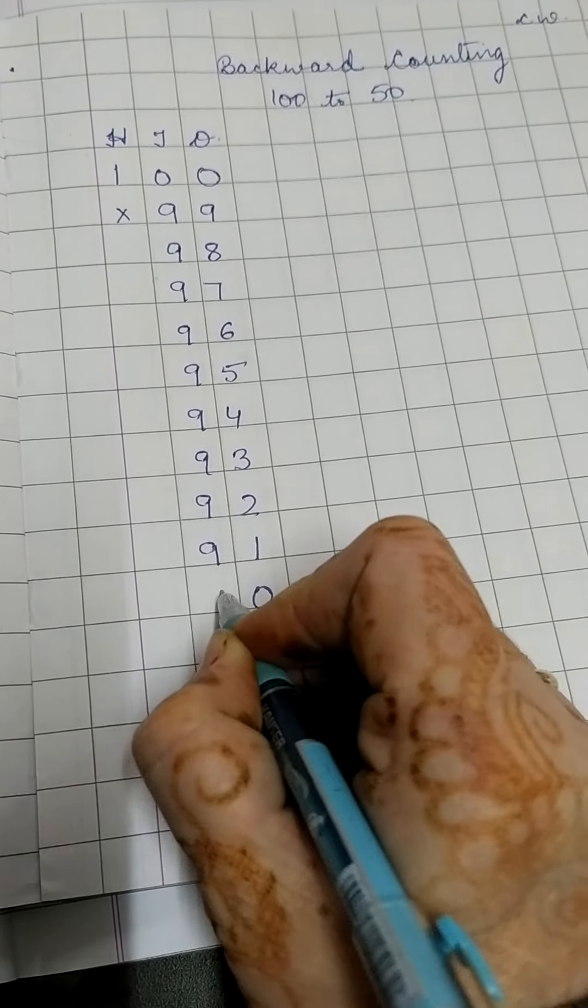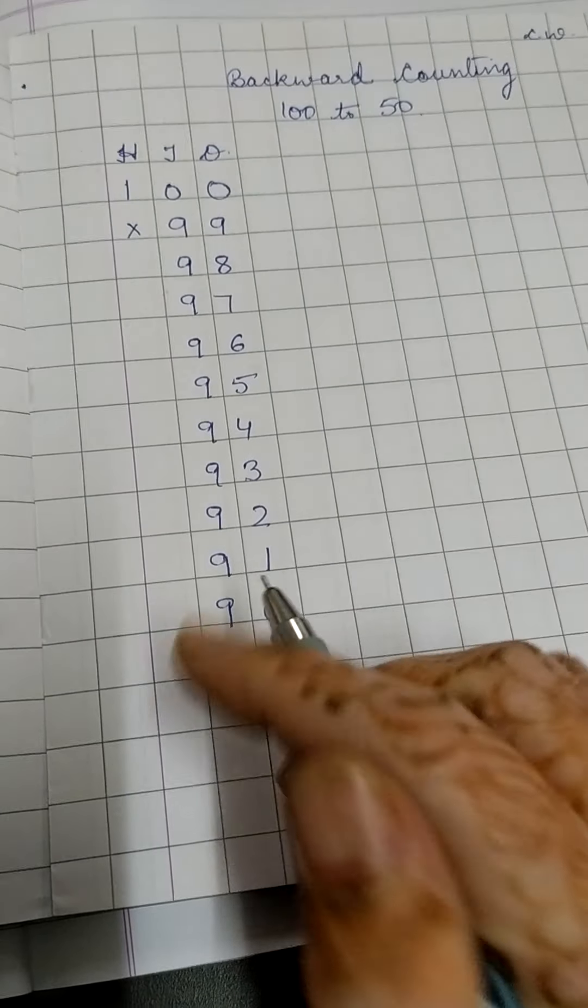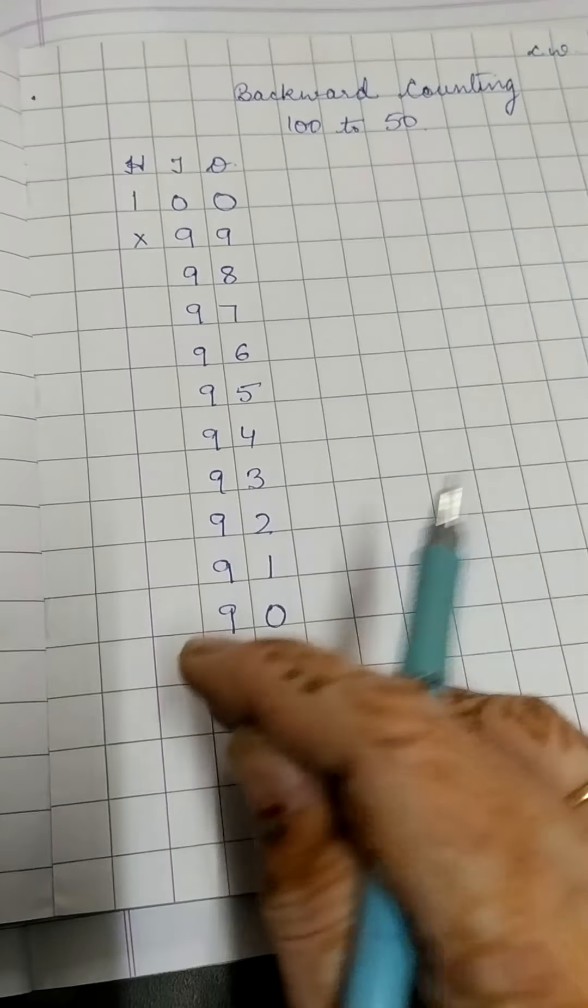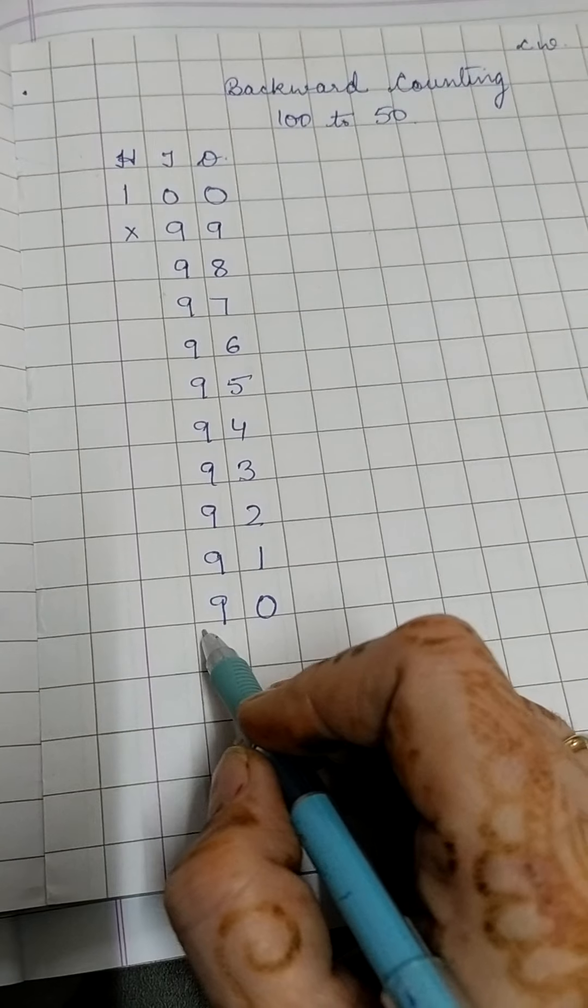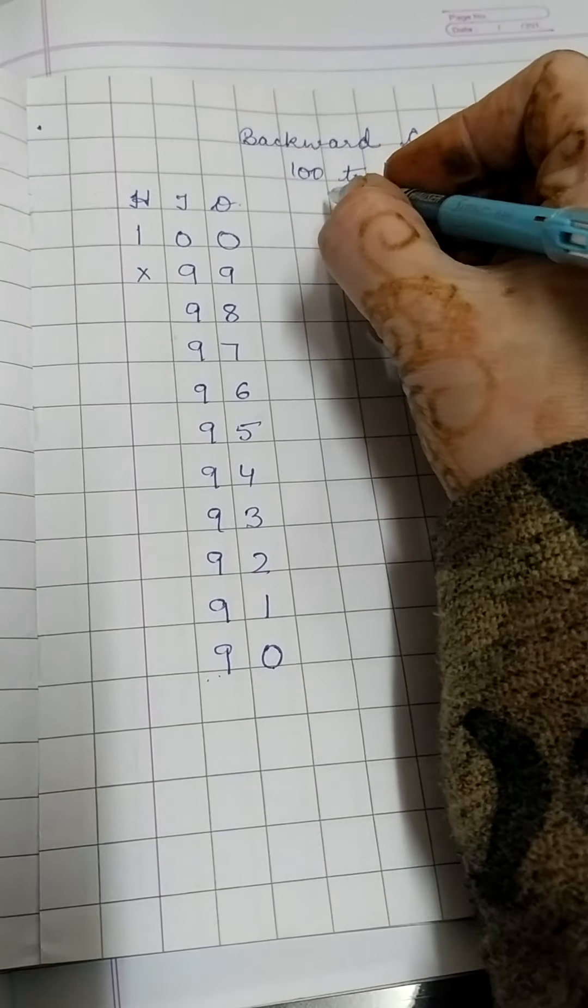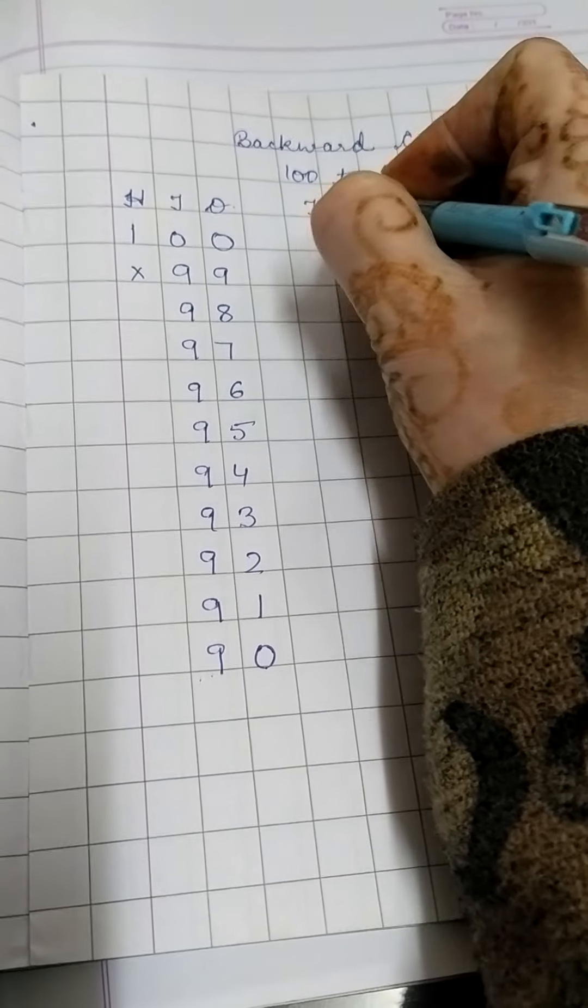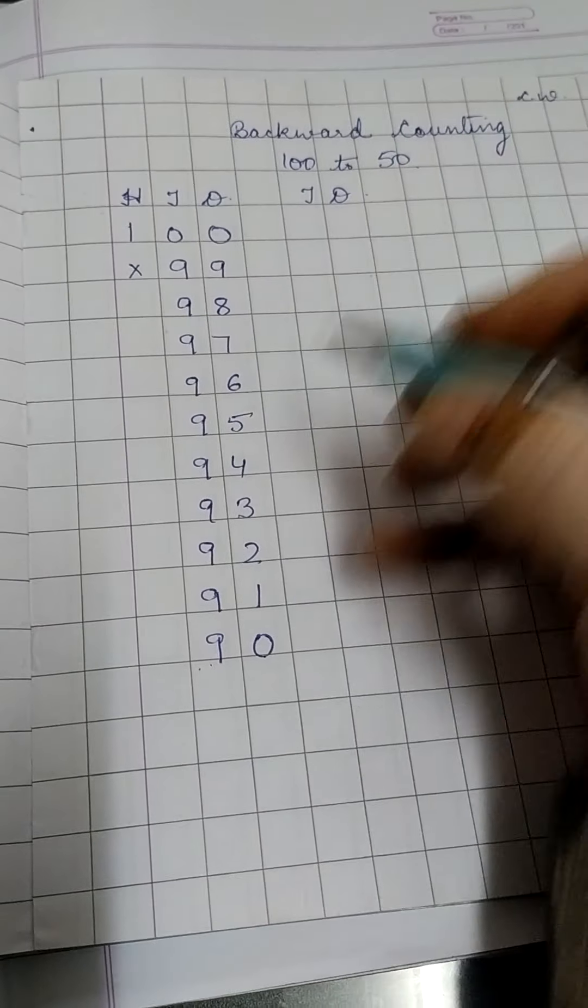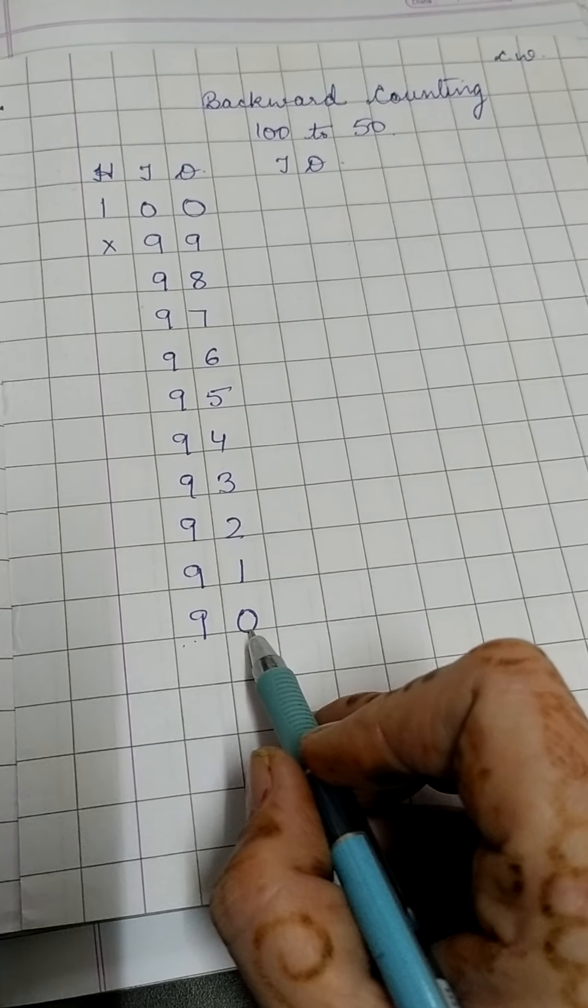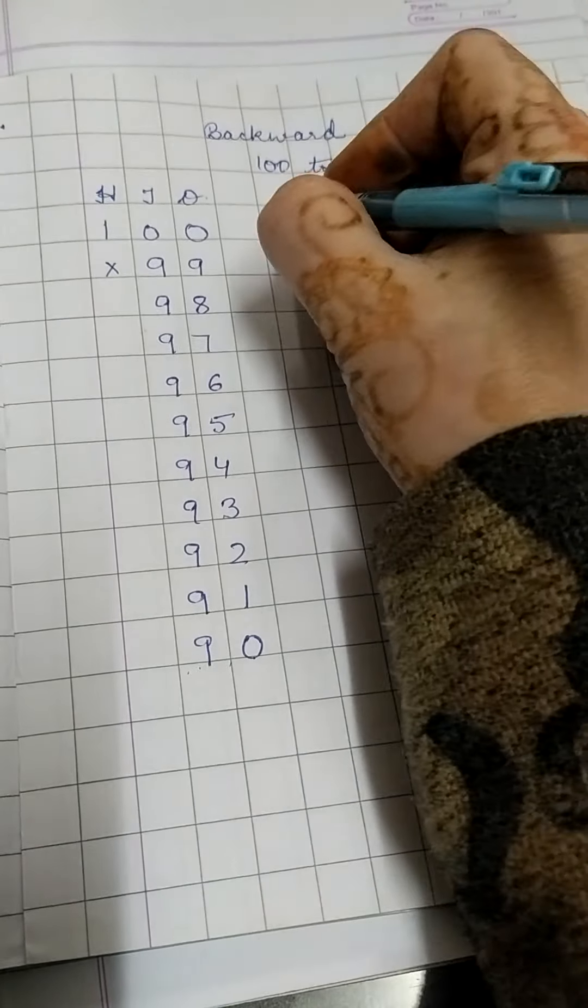Now before 1, what is there? It's 0. 90. So this is from 100 to 90. Now because we have only 2 digits now, 0 and 9, so the next line won't have hundreds place. It will have only tens and ones place. So before 90, now see here it is 90.